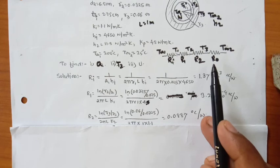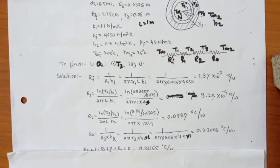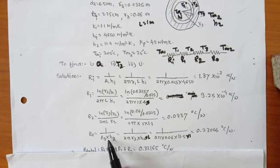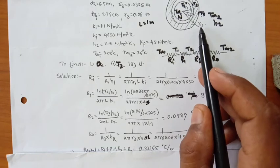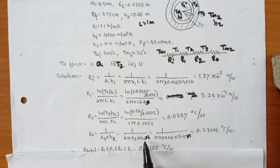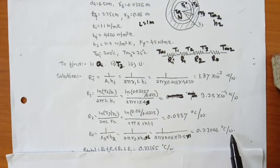The last thermal resistance is the convection outside the insulating material. The formula is similar to Ri: Ro = 1 / (A3 × H2), where A3 is the area corresponding to R3. So Ro = 1 / (2π × R3 × H2 × L) = 1 / (2π × 0.06 × 11.5 × 1) = 0.23060 °C/W.